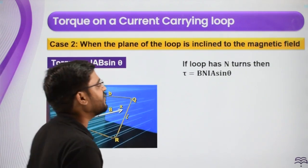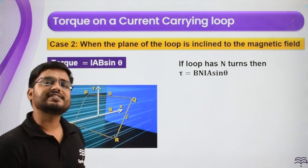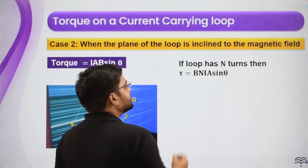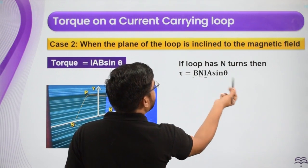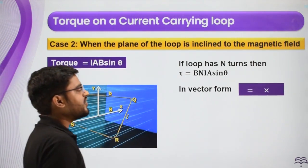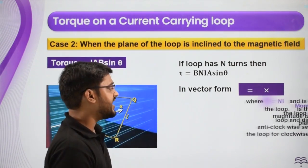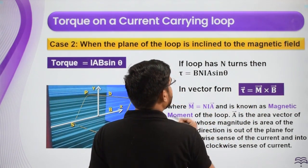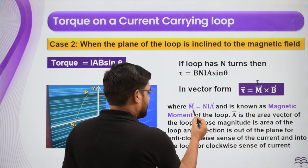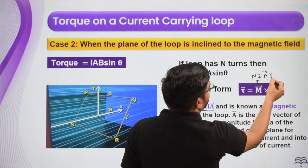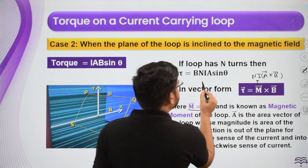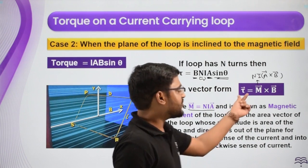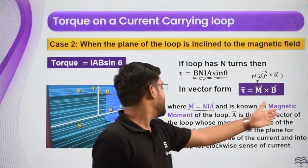If there are N number of turns, the torque simply becomes N times larger, since each wire experiences a force. So torque = NIAB sin theta. In vector form, torque = M cross B, where M is the magnetic moment of the loop, defined as M = NIA. Here N is the number of turns, I is the current, and A vector is the area vector.